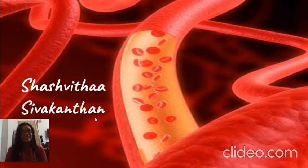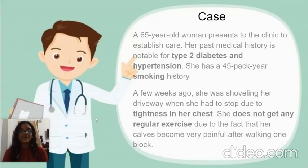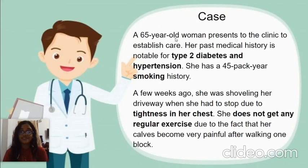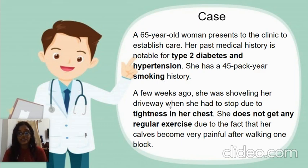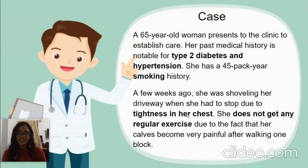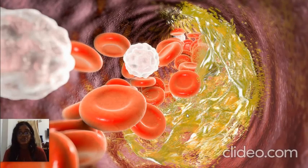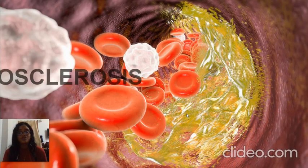Before we begin, let's look at a simple case. A 65 year old woman comes to the clinic having a past history of diabetes, hypertension, and smoking. A few weeks ago, she comes with the complaint of tightness in her chest, and she's also someone who doesn't do much exercise. Based on all these clinical findings, we can come to the diagnosis that she suffers from atherosclerosis.